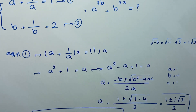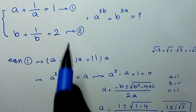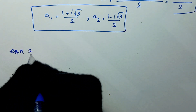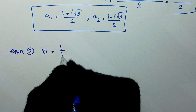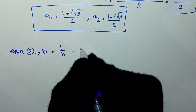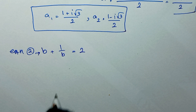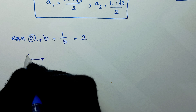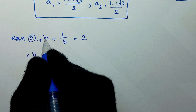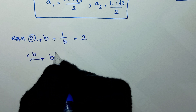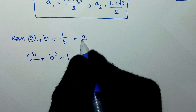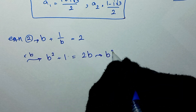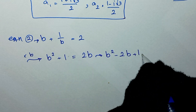In the next step we write equation number two. From equation two, b plus one over b is equal to two. We multiply both sides by b: b times b is b squared, one over b times b is one, and two times b is two b. Taking the terms to one side gives us b squared minus two b plus one is equal to zero.